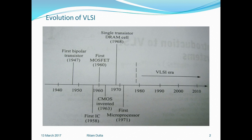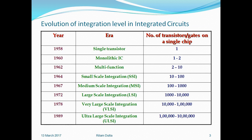Moving ahead with the evolution of VLSI design — this is a graph discussing the basic history, the journey of how it started in the year 1947 from the first bipolar junction transistor to billions of transistors. This slide on the evolution of integration level of IC depicts that the journey started with a single transistor designed into a single IC or single chip in the year 1958.